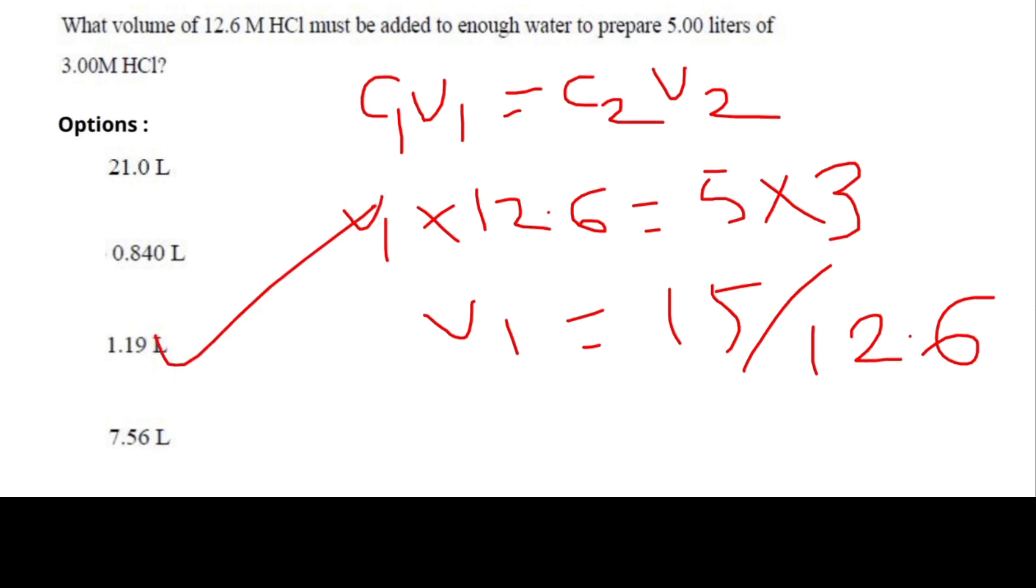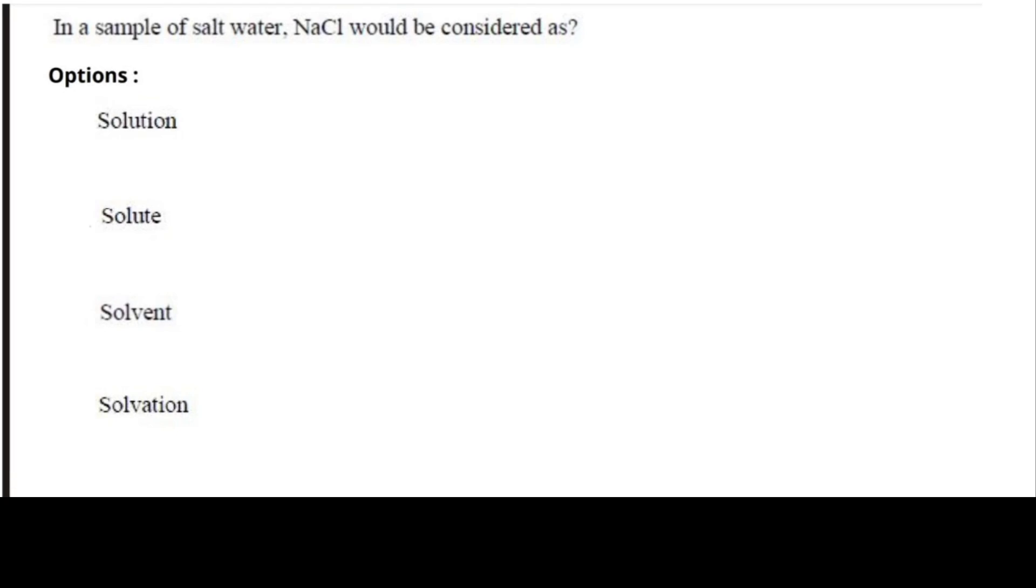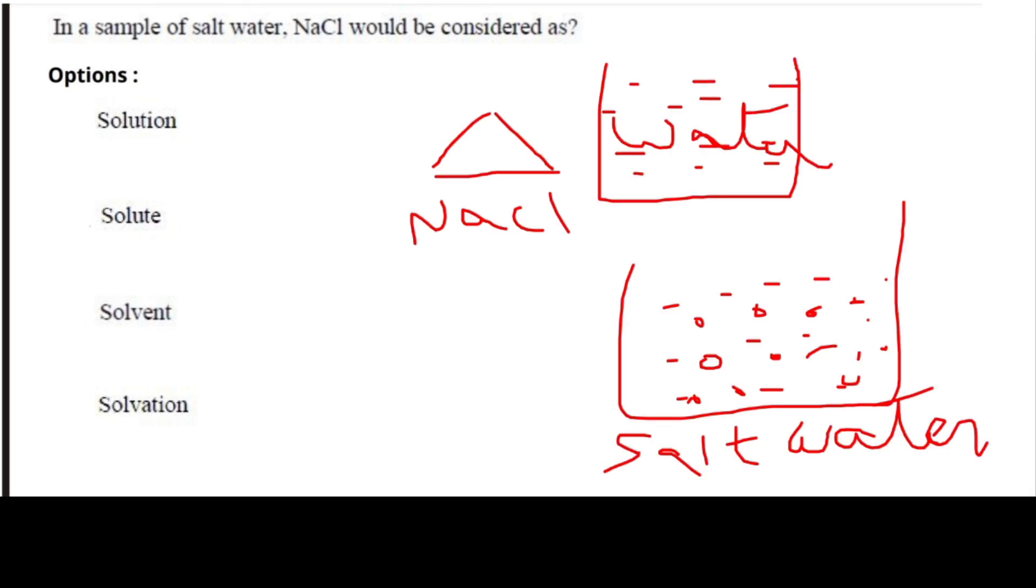Next question: in a sample of salt water, NaCl would be considered as. Here in the figure we can observe that salt water - when the salt is mixed in water, then it forms a solution called salt water. Here the salt is solute and the water is solvent. So we know that salt's chemical formula is NaCl, so the answer is solute. Hence option 2 is correct.